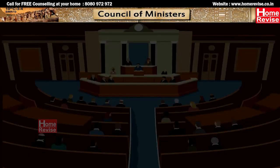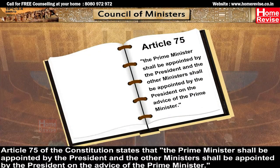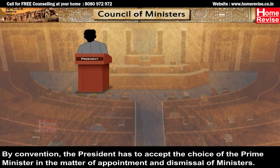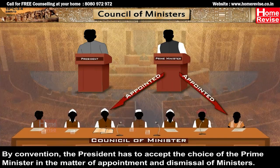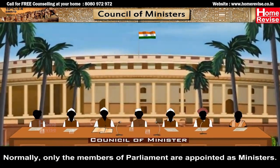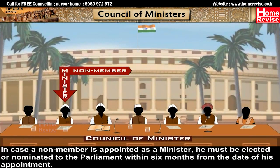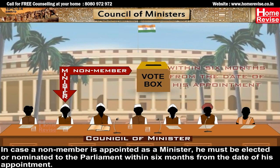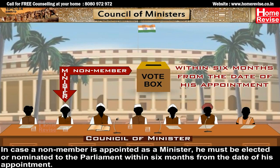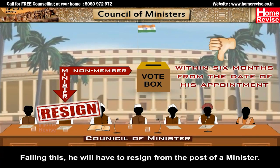The President has to appoint that person who can prove he has the support of some smaller groups or parties in order to have a majority in the House. Article 75 of the Constitution states that the Prime Minister shall be appointed by the President, and the other Ministers shall be appointed by the President on the advice of the Prime Minister. By convention, the President has to accept the choice of the Prime Minister in matters of appointment and dismissal of Ministers. Normally, only Members of Parliament are appointed as Ministers. If a non-member is appointed as a Minister, he must be elected or nominated to Parliament within six months, failing which he will have to resign.